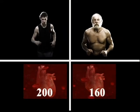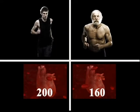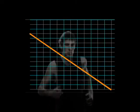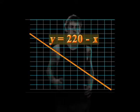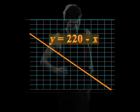There is a linear function that relates heartbeat to age, y equals 220 minus x, where y is the maximum number of heartbeats per minute, and x is the age of the person.